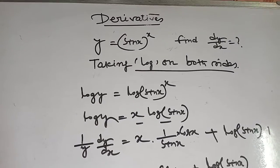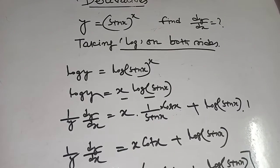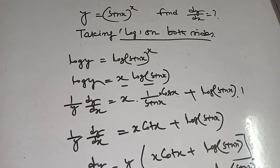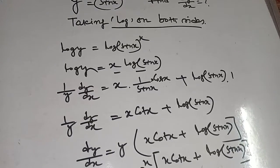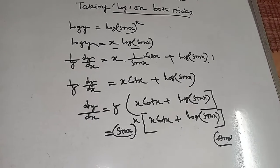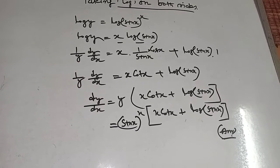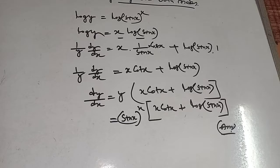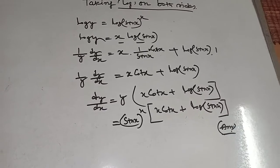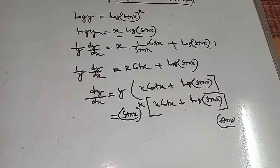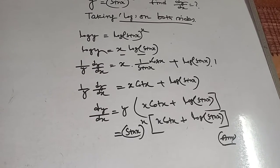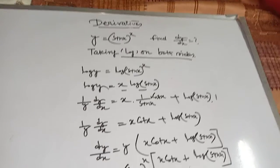So, y equal to sin x whole to the power x, find dy/dx. Taking log on both sides: log y equal to x into log sin x. Differentiating with respect to x: 1 by y dy/dx equal to x into cot x plus log sin x. Therefore dy/dx equal to sin x whole to the power x into x cot x plus log sin x. This is the answer.